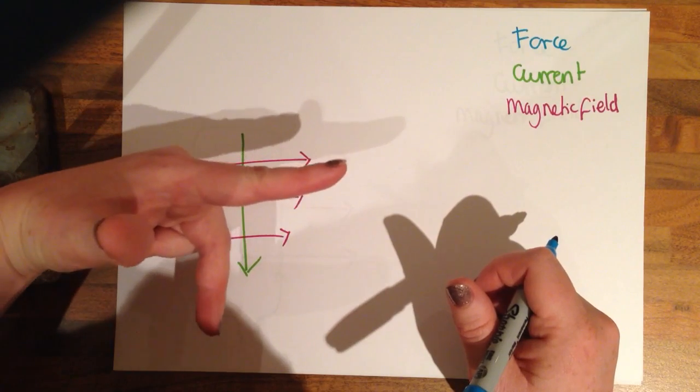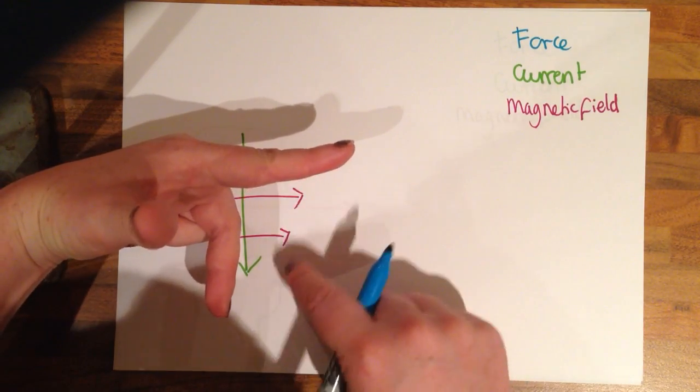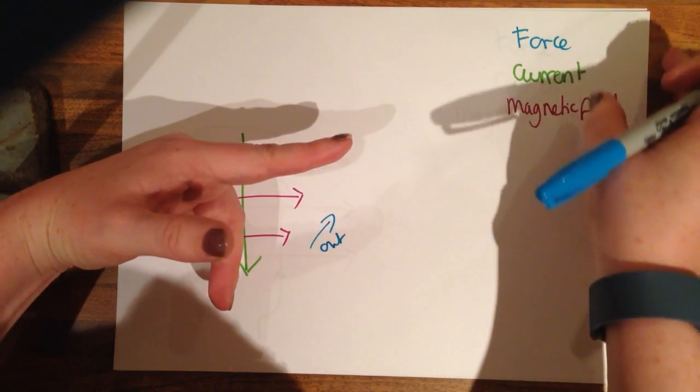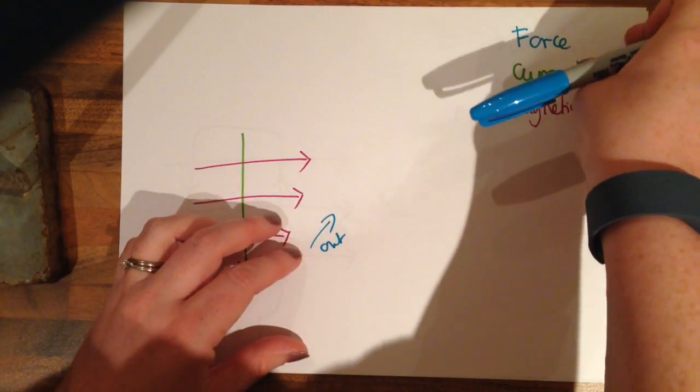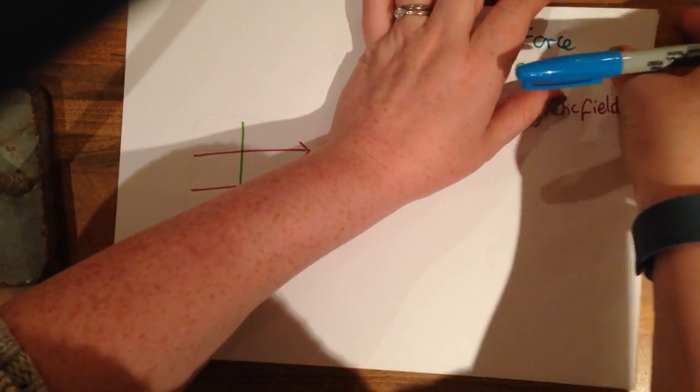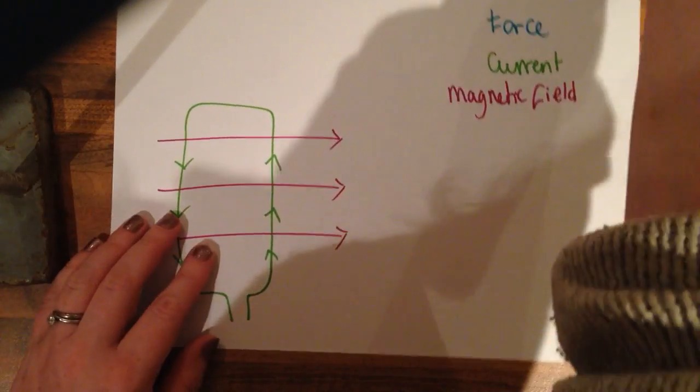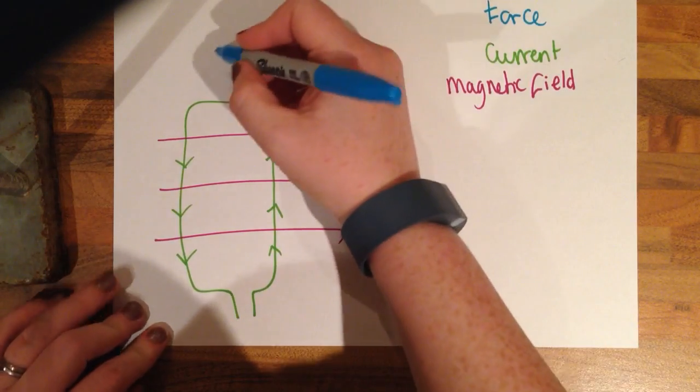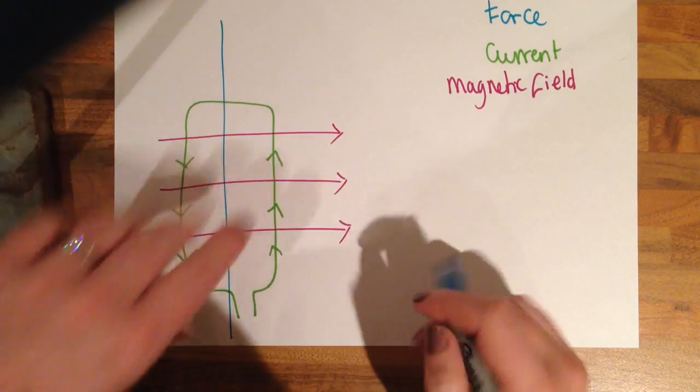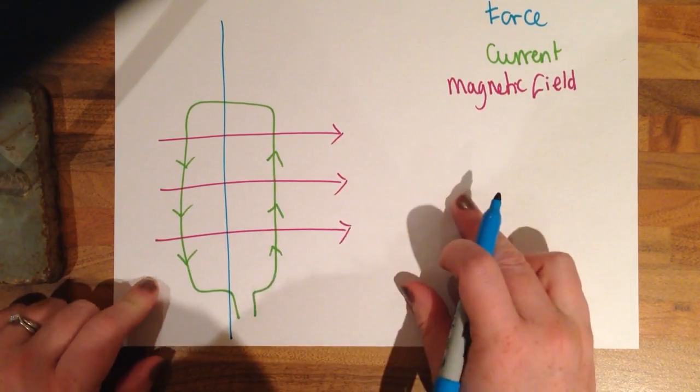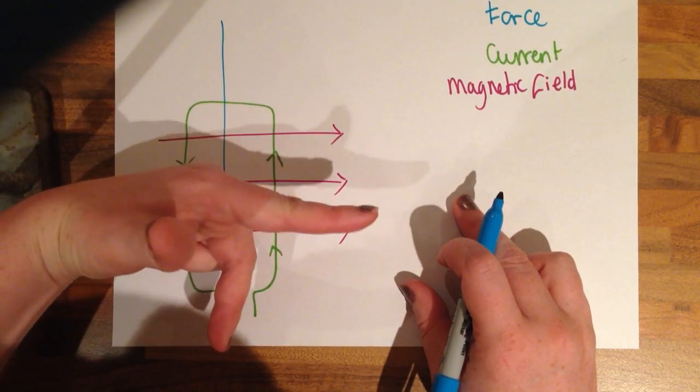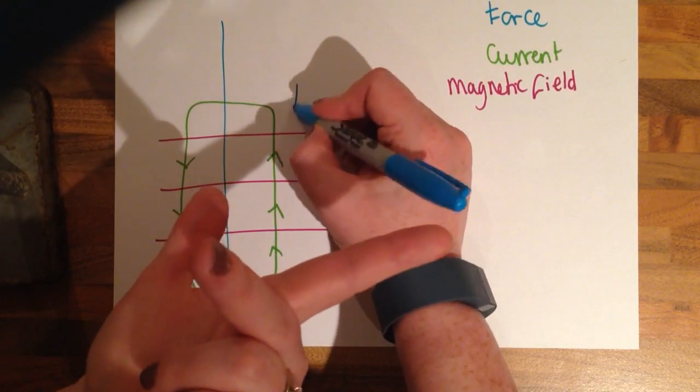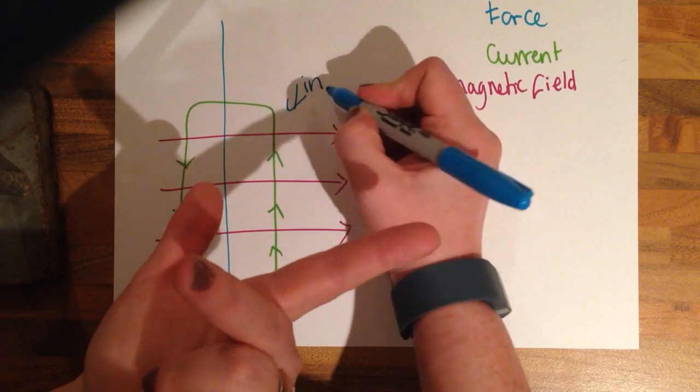So my magnetic field going that way, my current is going down and my force is coming out of the paper. Now an electric motor depends on having a coil of wire inside it and we need to treat each half separately. So if we start with this half, I have my field going that way, my current going in that direction, so the force is going into the paper.